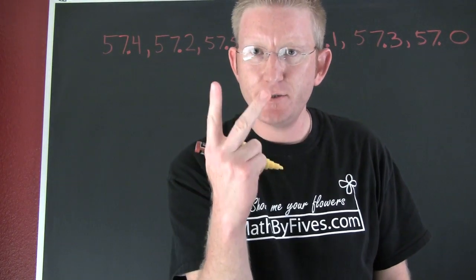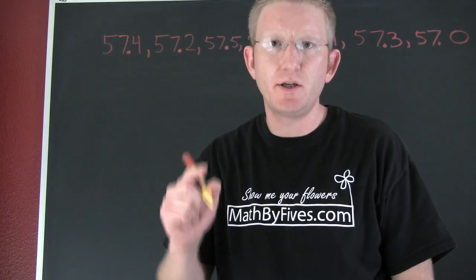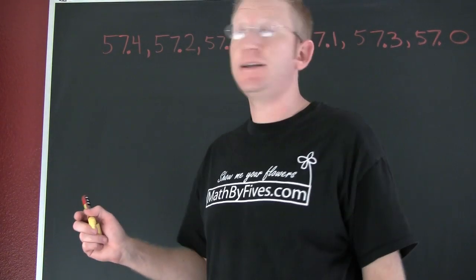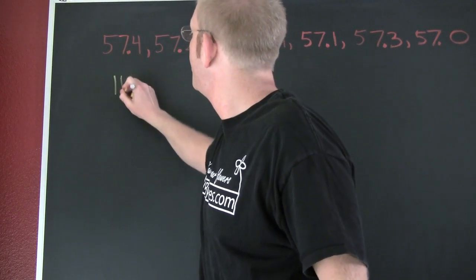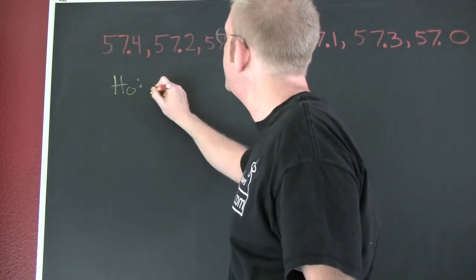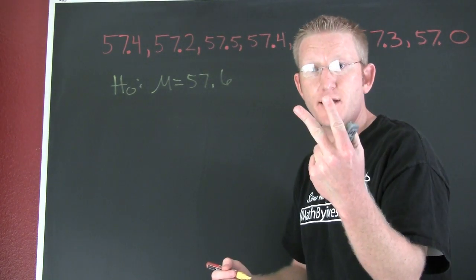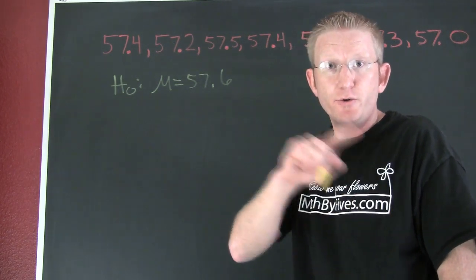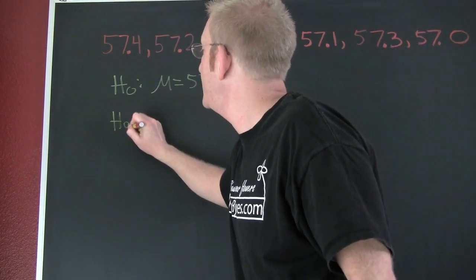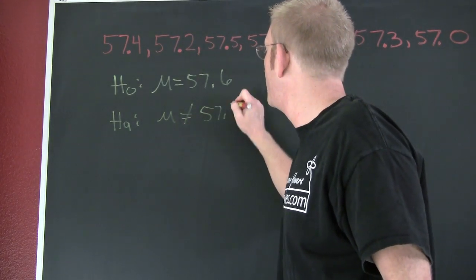Now because we're testing the two-tailed distribution, we need to set up our null and alternative hypothesis. We're always going to assume that it's true until we are able to show, beyond a reasonable doubt or with statistical significance, that it is not true. So when we set up our null, H0, it's going to be their claim. It says that the average is 57.6. Now our alternative, because it's a two-tailed test, means that we could be to the low side or to the high side. Our alternative HA says that mu is not equal to 57.6.